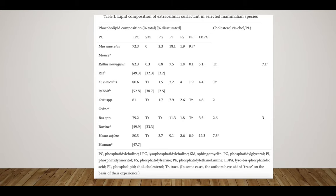As previously mentioned, the composition of surfactant contains various proteins, lipids, and phospholipids. It has been studied with various animal species, both clinically and experimentally. The types of animals and their components are listed in the table here. You can see Homo sapiens for humans towards the bottom, as well as mice, rats, rabbits, sheep, and different bovine species. It's interesting to see the similarities and differences between the species — take a look and see what conclusions you can draw and what questions arise for you.